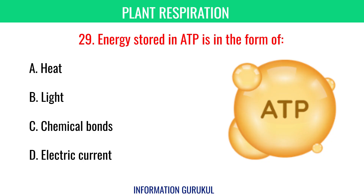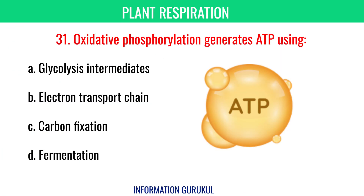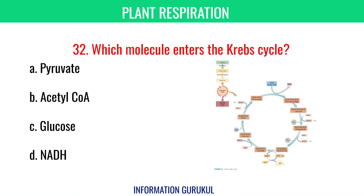Energy stored in ATP is in the form of chemical bonds. Which of the following is not a step in aerobic respiration? Fermentation. Oxidative phosphorylation generates ATP using the electron transport chain. Which molecule enters the Krebs cycle? Acetyl coenzyme A.